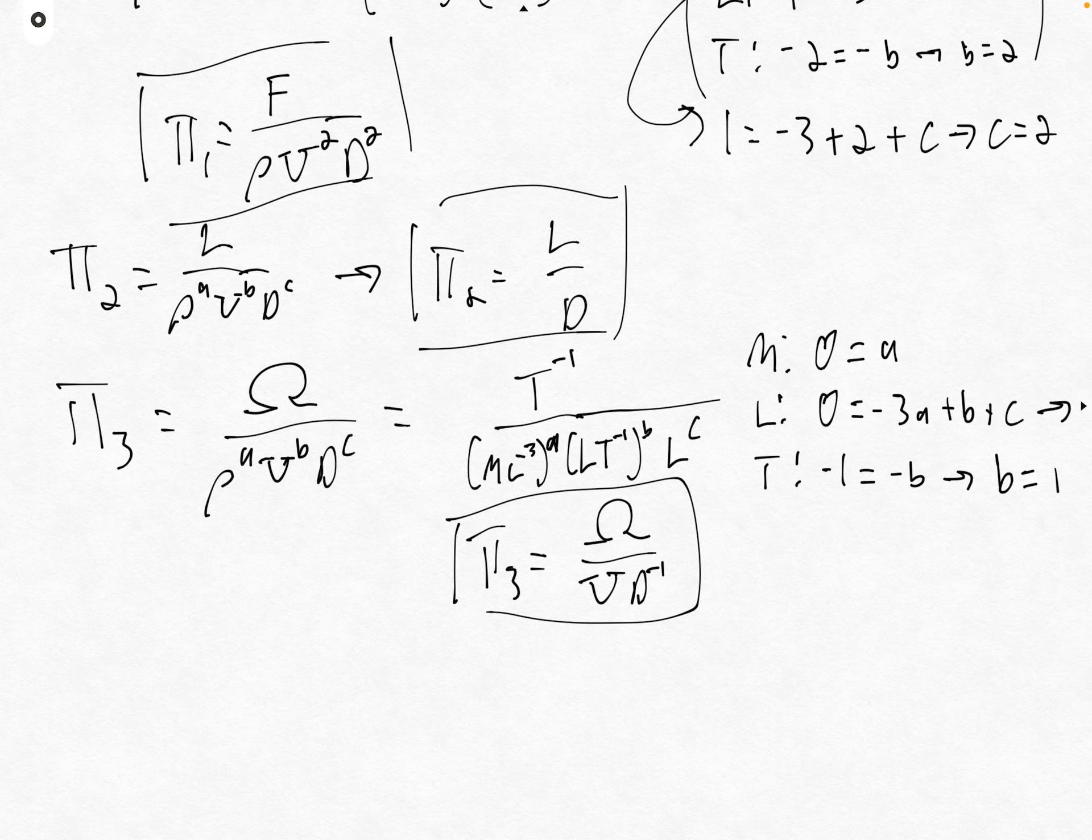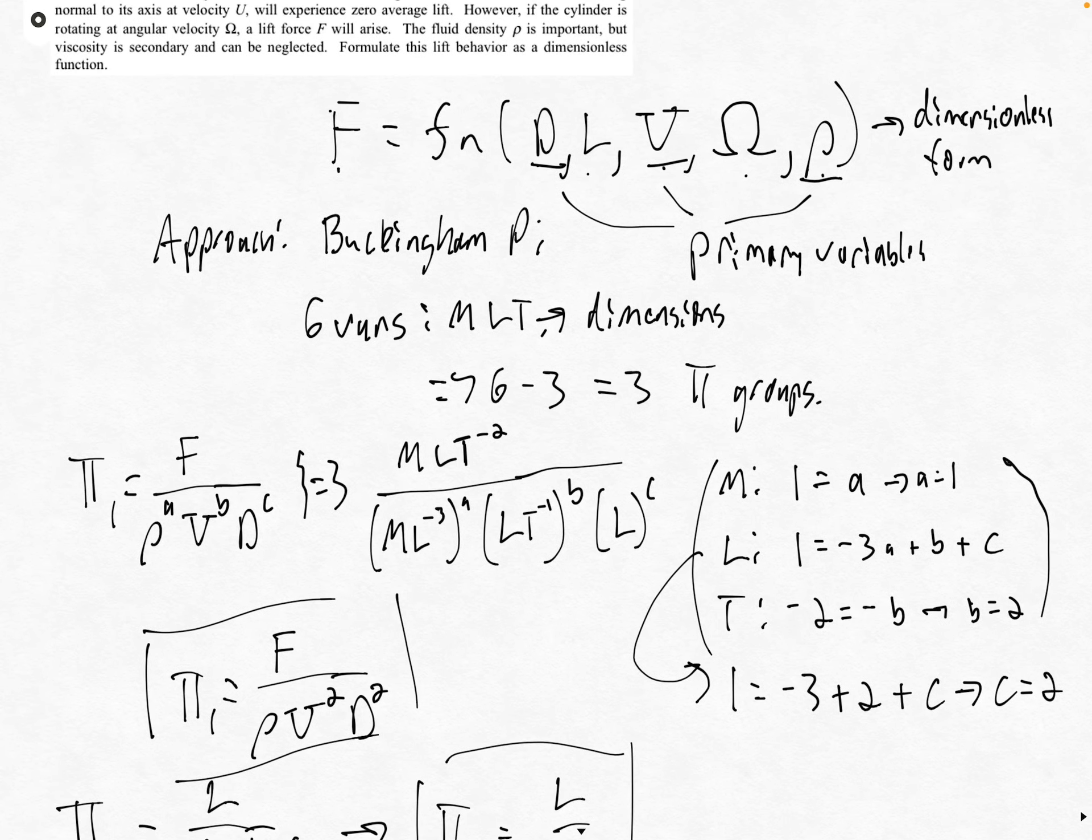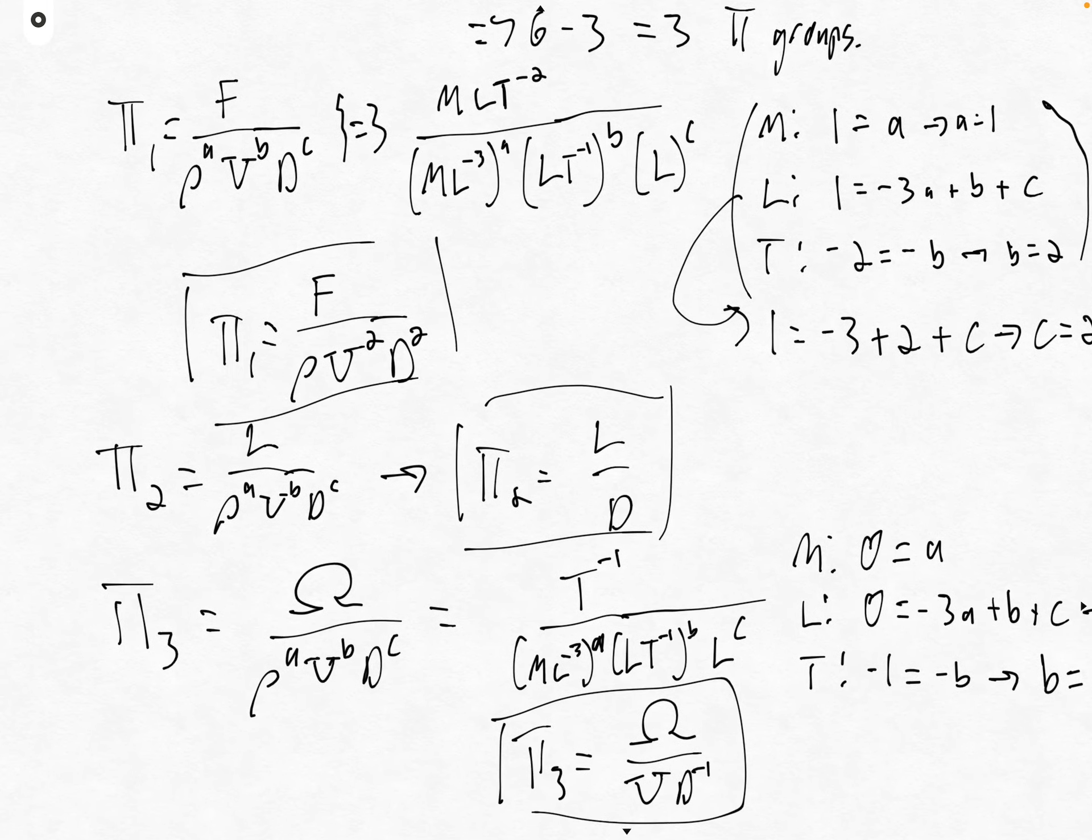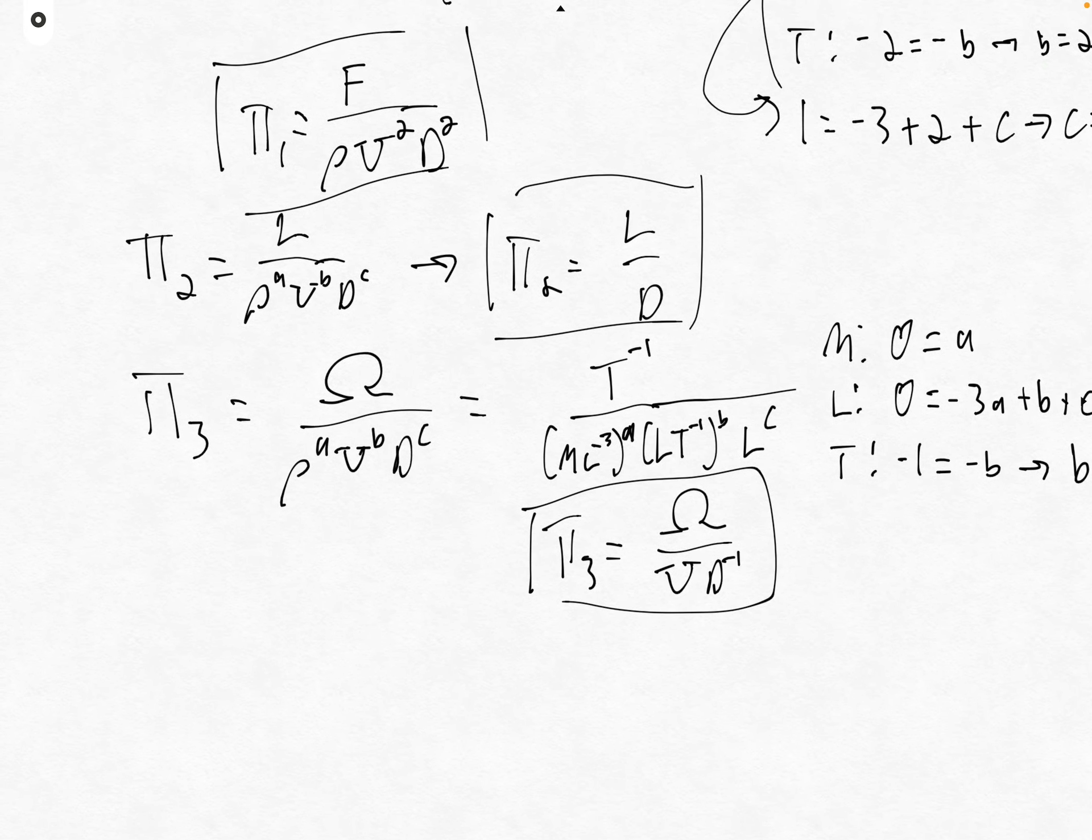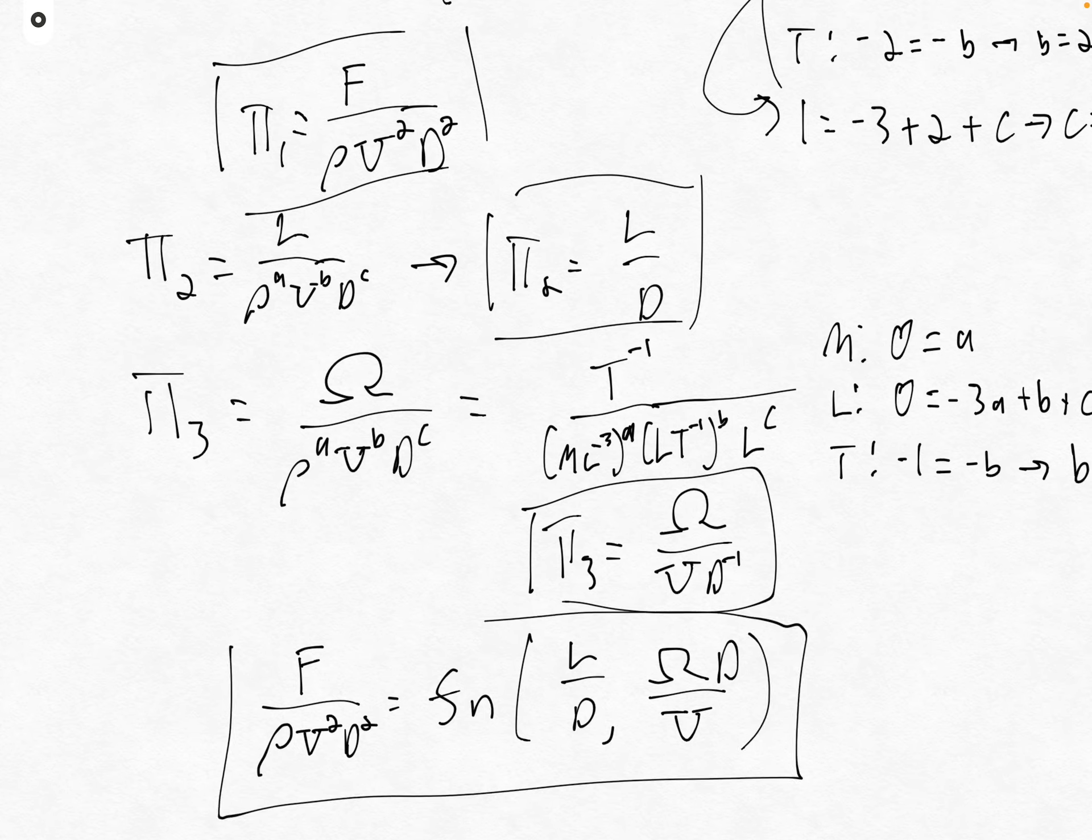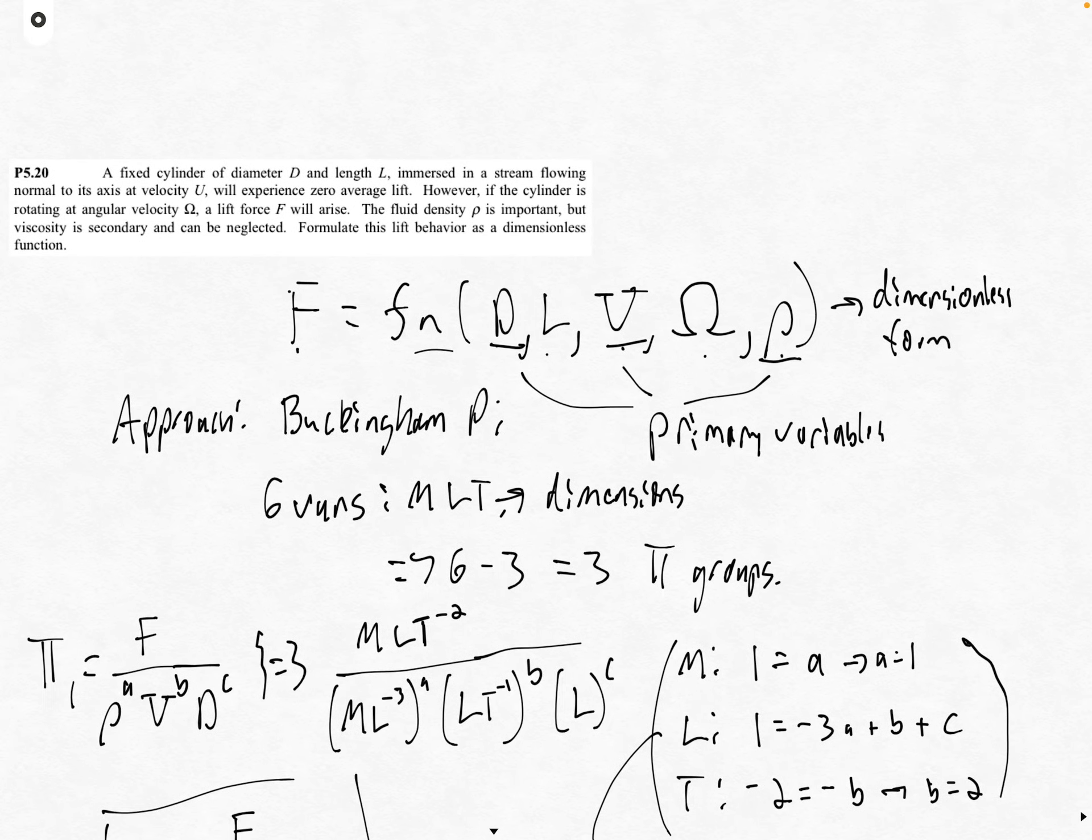We're asked to construct a dimensionless form of this function. We write pi group one as a function of the other two pi groups. Our final answer is F over rho u squared d squared equals some unknown function of L over d and omega d over u. That is our final answer to this second Buckingham pi example. Thank you.